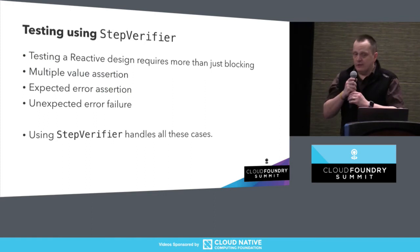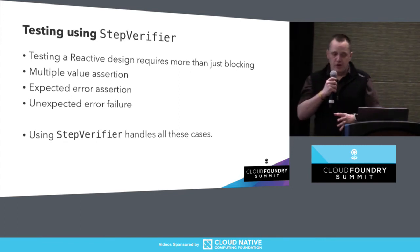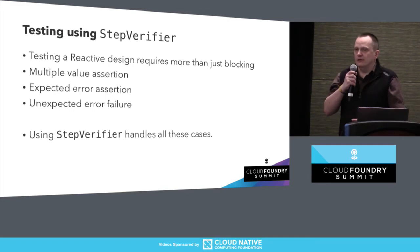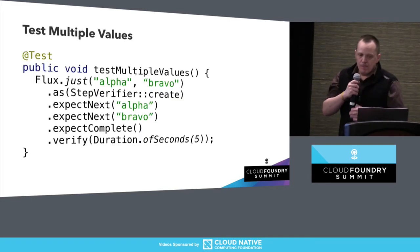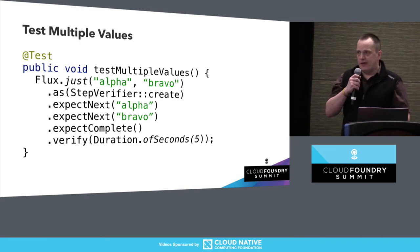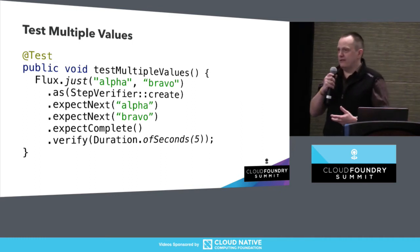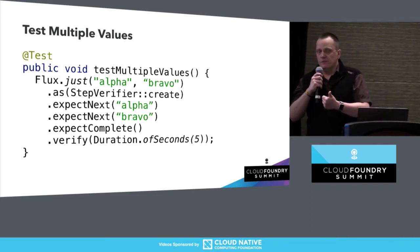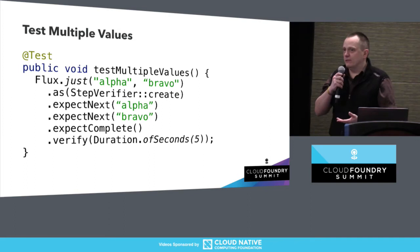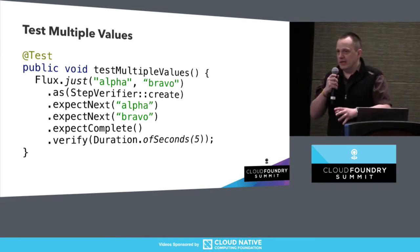Project Reactor gives us a way to deal with this — the StepVerifier. It has several benefits beyond just handling blocking. It allows multiple value assertions, expected error assertions, and handling of unexpected errors. For example, generating a Flux with two values — alpha and bravo — we subscribe using a StepVerifier, then assert: expect alpha first, expect bravo second, and expect a complete signal that nothing more follows. We give it a duration of five seconds because this is asynchronous and we don't want to wait forever.